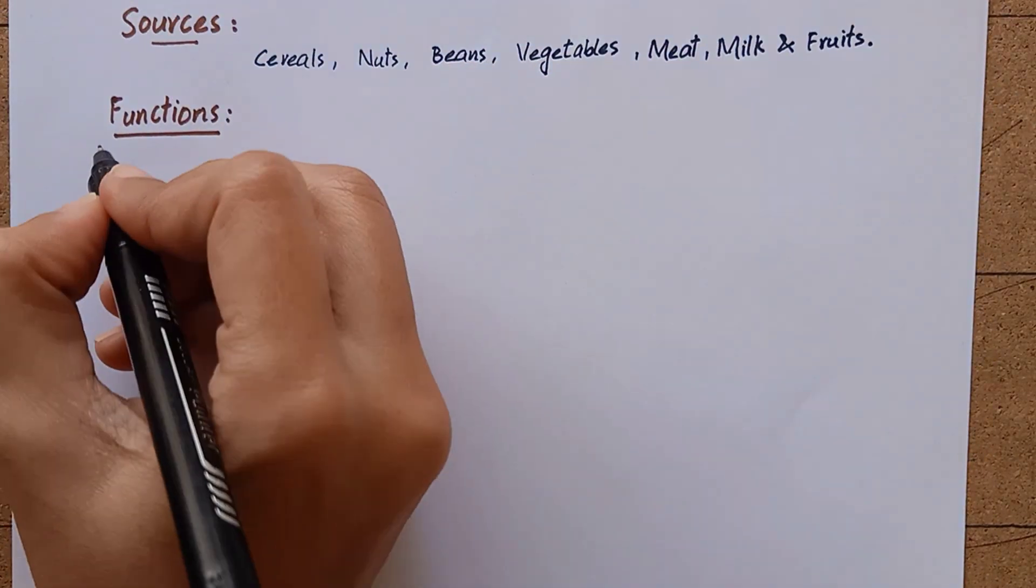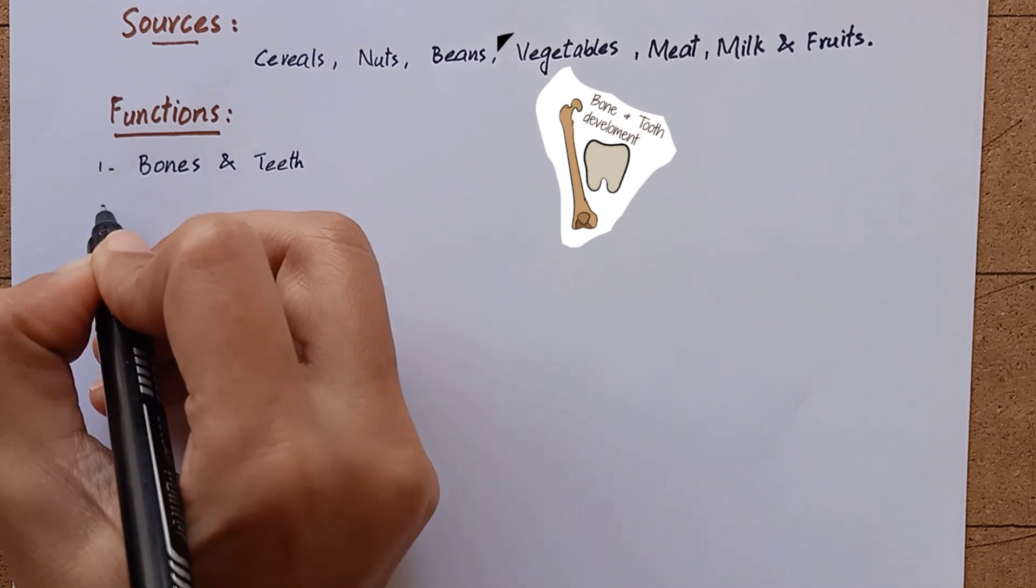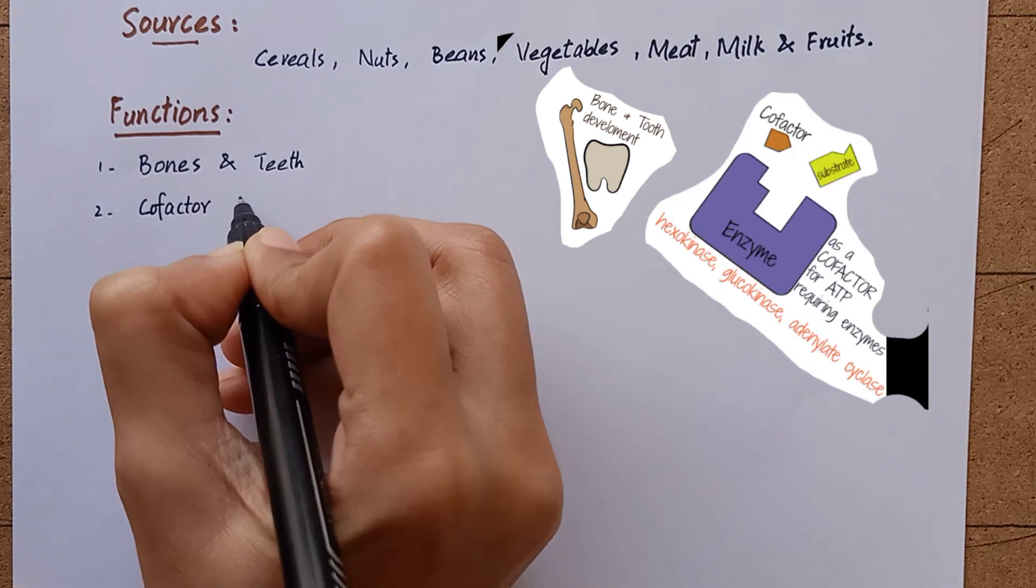When we look into the biochemical functions, magnesium is required for the formation of bones and teeth. It serves as a cofactor for several enzymes.